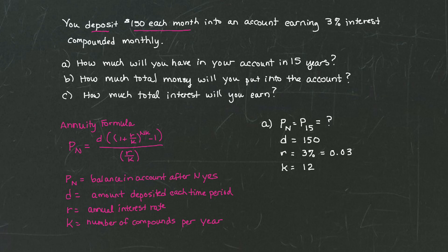Once we have all our variables identified, we put everything into our formula. So that means P sub 15 equals 150 times the quantity of 1 plus 0.03 over 12, all raised to the N times K. What was N again? The N is 15, right? So the number of years is 15. And so when I have NK, that means I'm going to take 15 and multiply that times 12, and that's going to be my exponent. Then I'm going to subtract 1 and divide that whole quantity by 0.03 over 12.